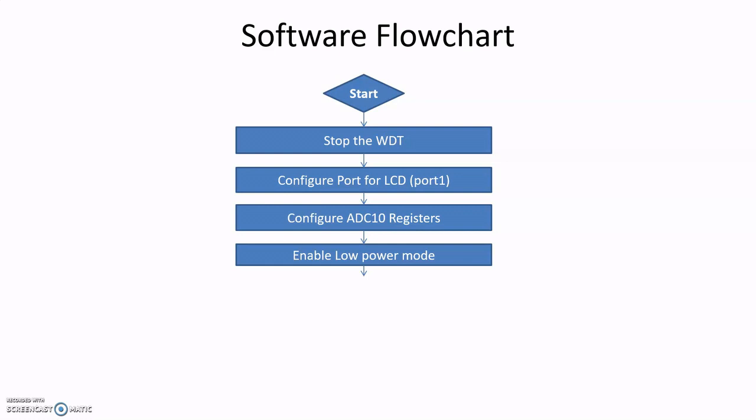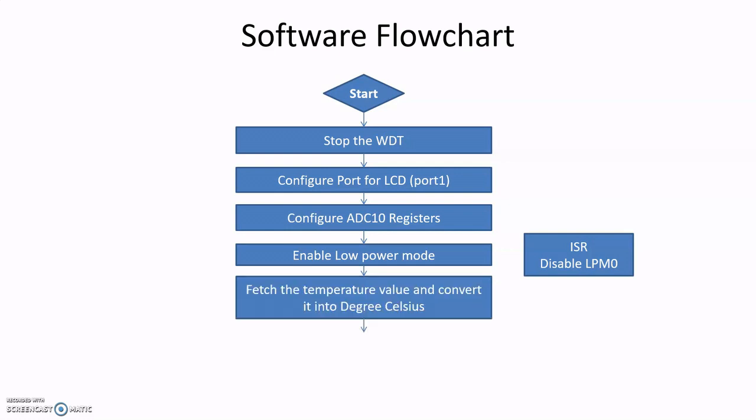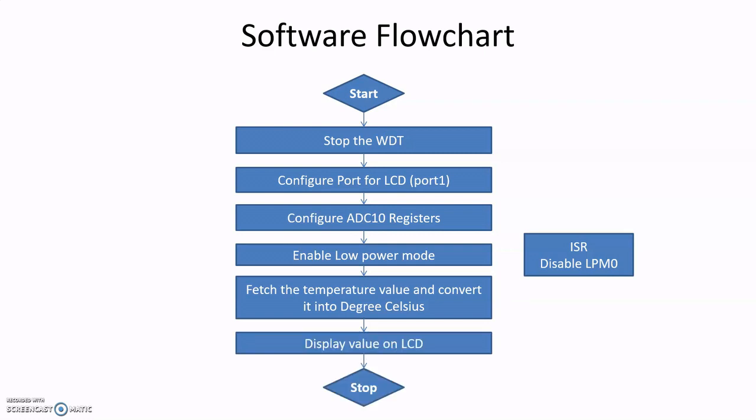Then we enable the low power mode, and once the control goes to the ISR after an interrupt, it goes into the ADC10 ISR. Then it simply disables the low power mode, and finally we fetch the temperature value, convert it into degrees Celsius, and display it on the LCD.